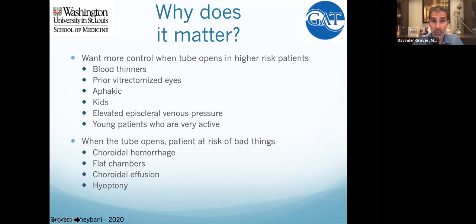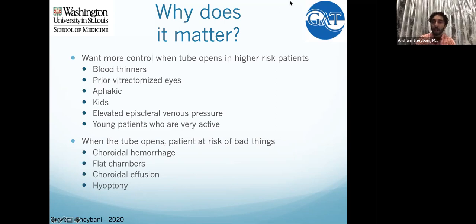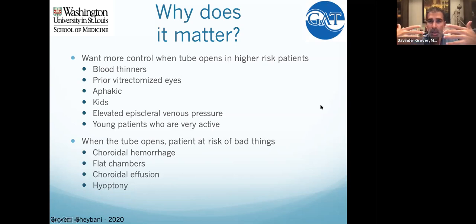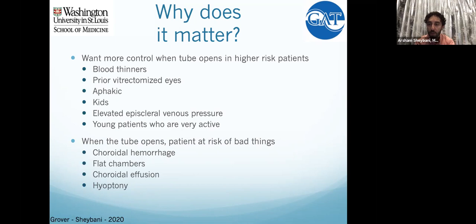When would you fill the AC after a tube shunt? I don't mind a little iridocorneal touch or a little shallowing peripherally. I don't like lens-cornea touch or if the tube is smashed against the cornea — in those situations I'll inject some viscoelastic. A little peripheral shallowing and iridocorneal touch doesn't bother me at all. Atropine is magical in some of those cases — also stopping the meds, considering a beta blocker on the other eye and stopping that for at least a week or two.